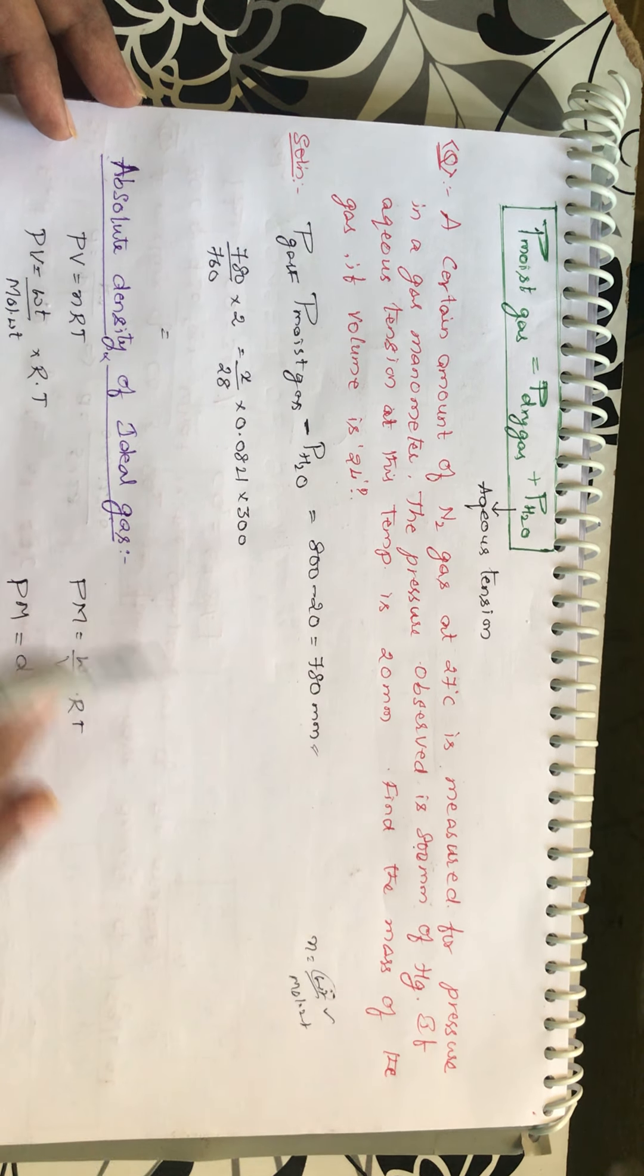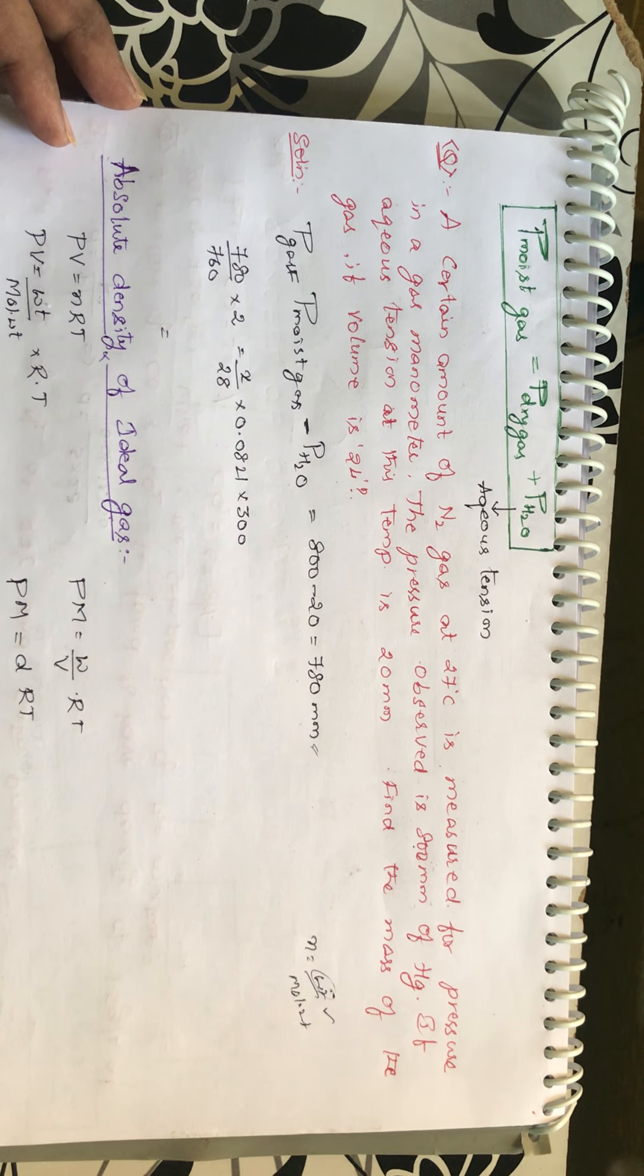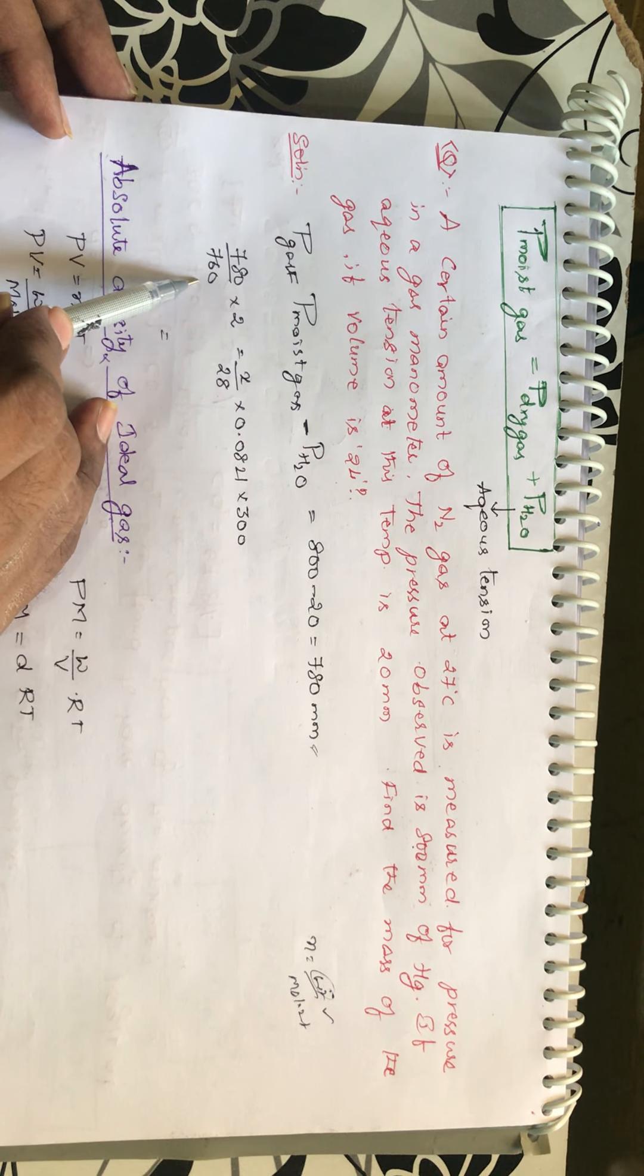Convert this 780 mm into atmospheres. You know that 760 mm is equal to 1 atmosphere and 780 mm will be equal to 780 by 760 atmospheres.